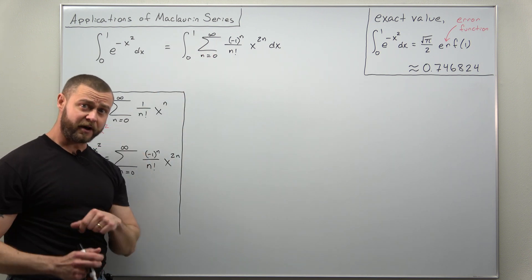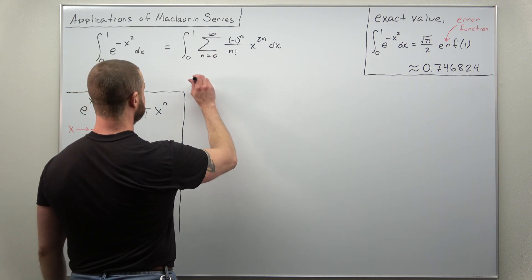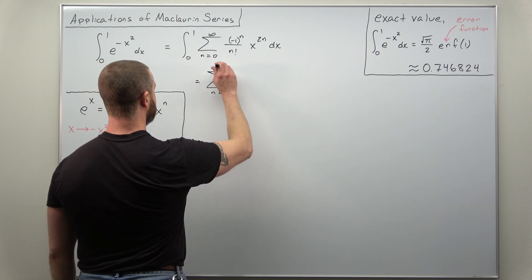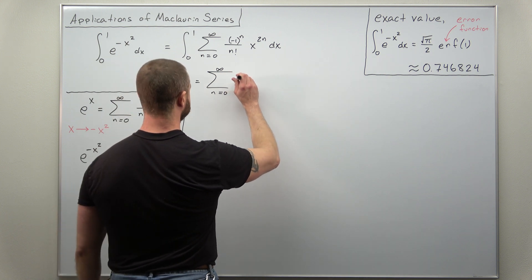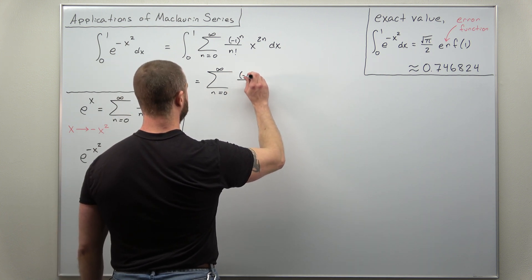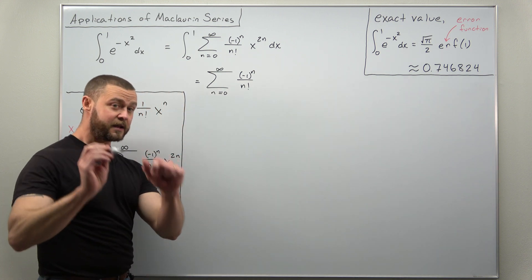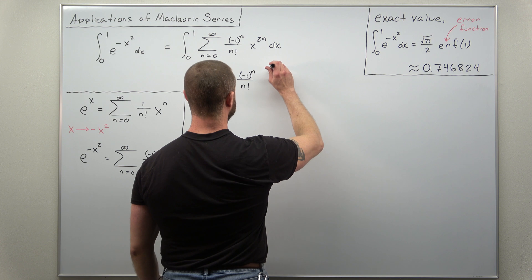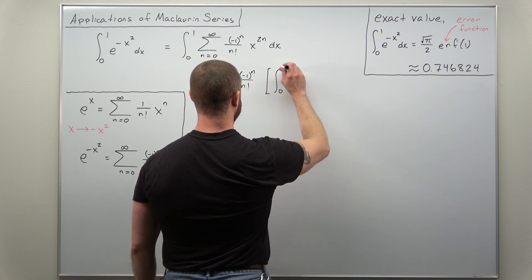Let me go ahead and switch the order of the sum and integral, and anything involving just n's are constants because we're integrating with respect to x. I can pull them in front of the integral, so let's rewrite this as the sum going from n equals 0 to infinity of negative 1 to the n power divided by n factorial, and now we're going to integrate x to the 2n from 0 to 1.